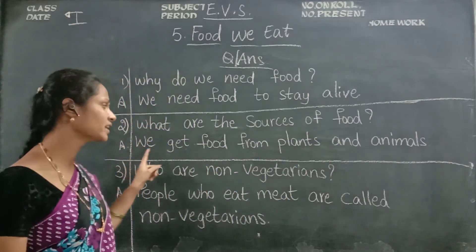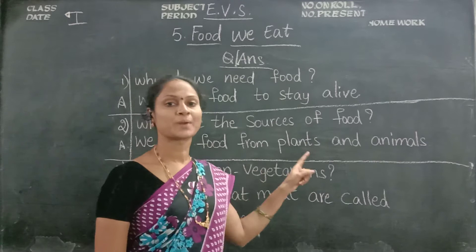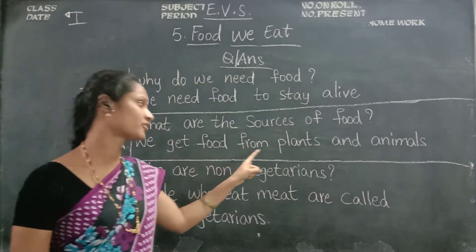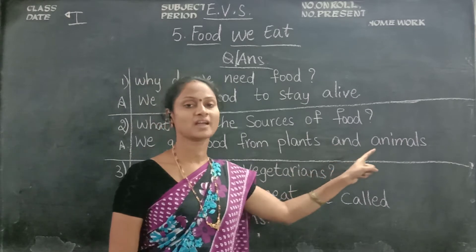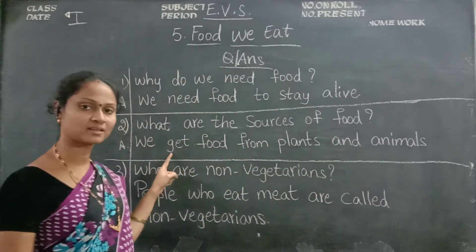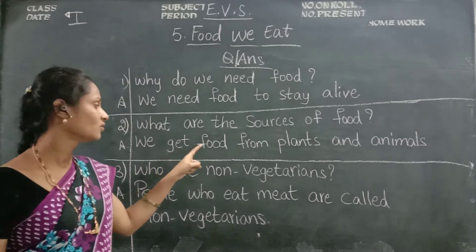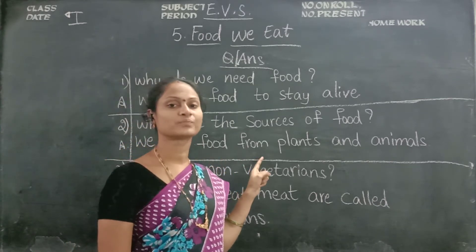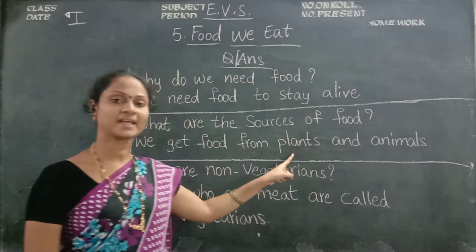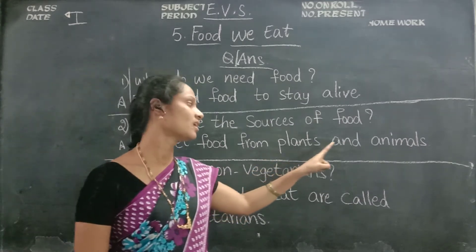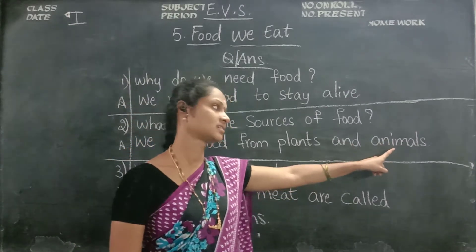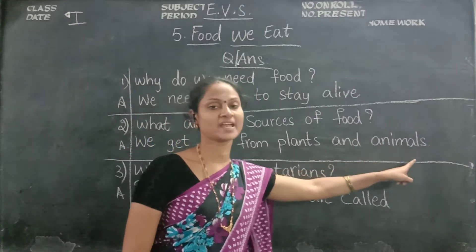Now see the answer. We get food from plants and animals. We — W.E. Get — G.E.T. Food — F.O.O.D. From — F.R.O.M. Plants — P.L.A.N.T.S. And — A.N.D. Animals — A.N.I.M.A.L.S. Animals.